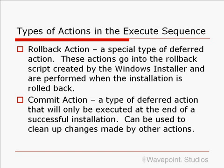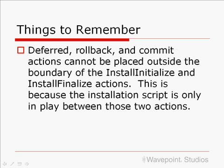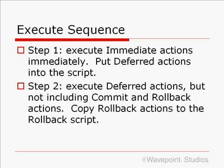Here are some things to remember. Deferred, rollback, and commit actions cannot be placed outside the boundary of the install initialize and install finalize actions, because the installation script is only in play between those two actions. There are various steps in the execute sequence. Step 1: execute immediate actions immediately and put deferred actions into the script. Step 2: execute deferred actions, not including commit and rollback actions; copy rollback actions to the rollback script. Step 3: in the case of a successful installation, execute all commit actions; in the case of a failed installation, execute the rollback script.